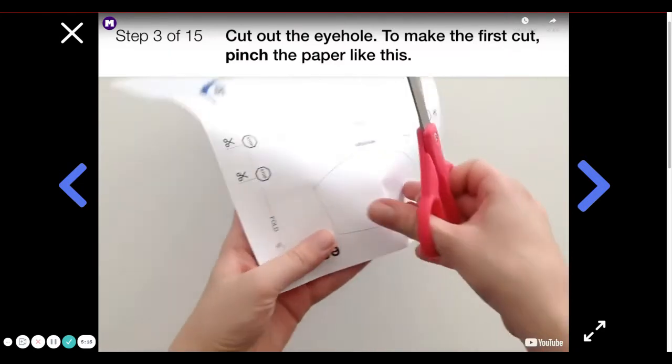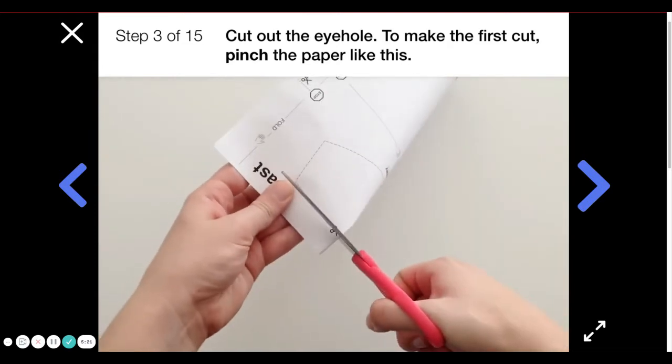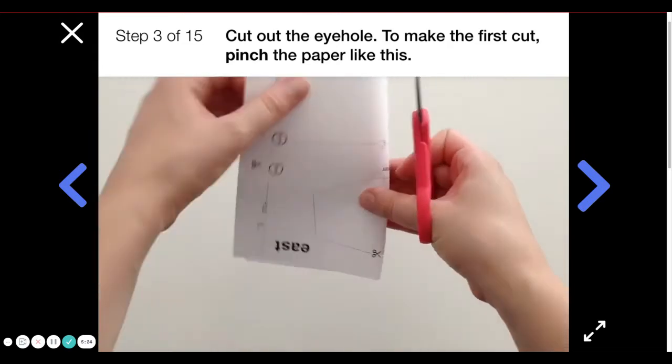Cut out the eye hole. To make the first cut, pinch the paper like this. Then to finish cutting, unfold it.